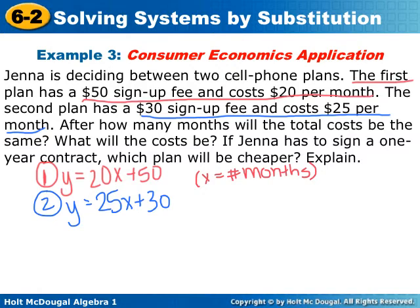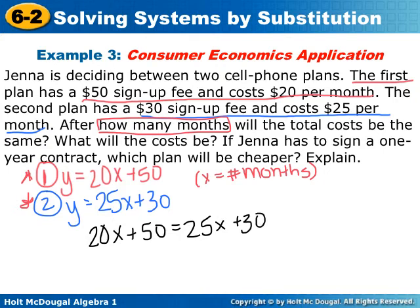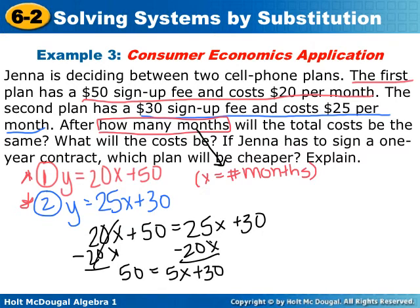After how many months will the total cost be the same? So it's asking us how many months will plan 1 equal plan 2? So I would set it up to make plan 1 equal to plan 2. It's asking how many months. Well, x is the number of months. So x is the variable that I want to solve for. I'm going to combine my variables. So 50 is 5x plus 30. Then I'm going to subtract 30 from both sides. And I get 20 is 5x or x is 4.